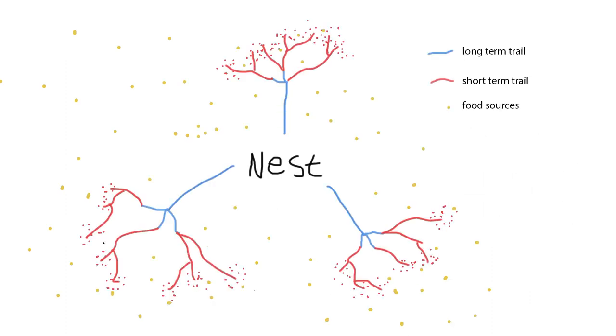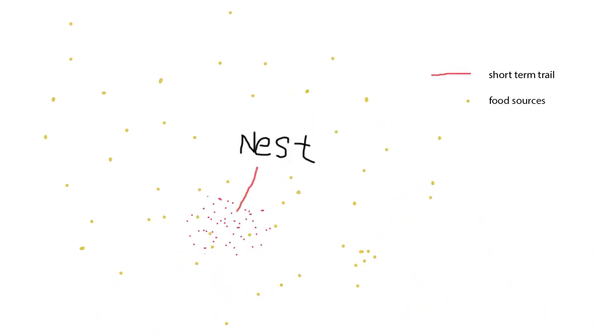Next up, we have trunk trails, foraging columns, and fence. Trunk trails involve dendritic long-term trails that ants follow, then radiating outwards to search for resources. Foraging columns are similar, but instead of dendritic shape, they take on column-like shaped trails, and are shorter lasting compared to trunk trails.